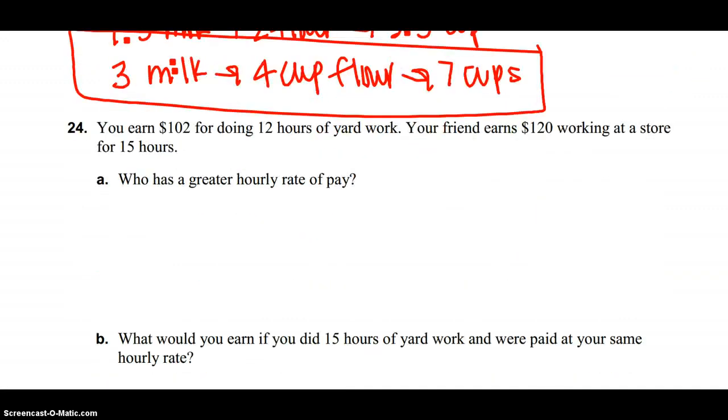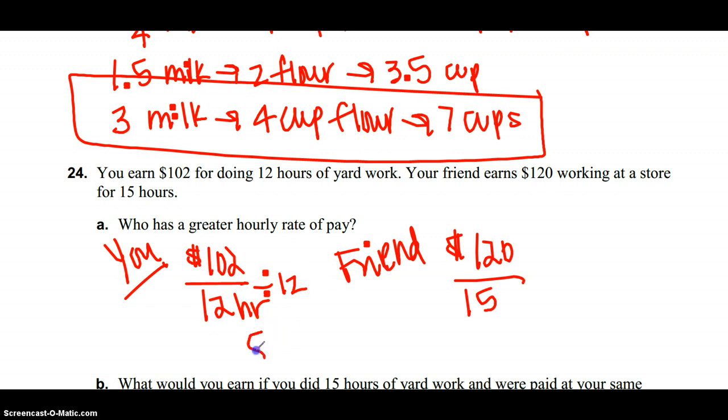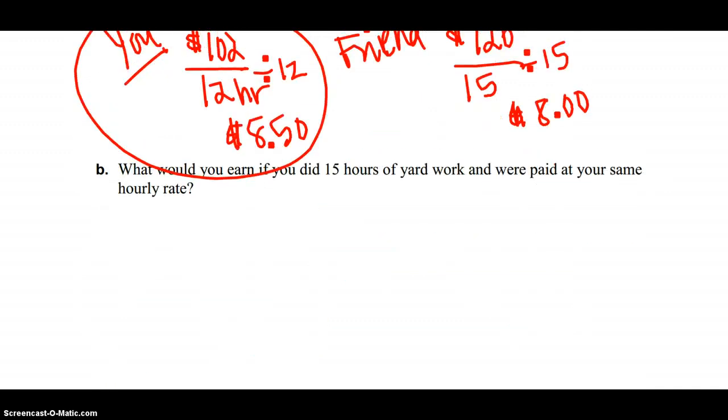24, you earn $102 for doing 12 hours of work. So this is you. Your friend earns $120 for 15 hours of work. And you're trying to figure out how much each of you earn per hour. So if I find the unit rate and divide both sides by 12, I earn $8.50 an hour. And my friend, if I divide by 15, only earns $8 an hour. So who earns more? I do. Last question, what would you earn if you did 15 hours of work? So you do 8.50 times 15 hours and you get $127 and 50 cents.